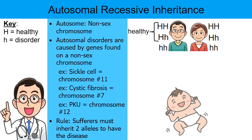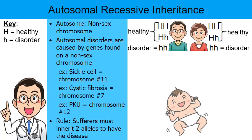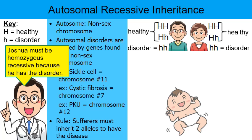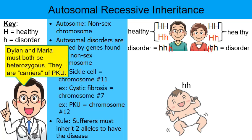Mr. Henderson is healthy, so he has to be either homozygous dominant or heterozygous. Same for Mrs. Henderson — she's healthy so she must be one of those two combinations. But their child Joshua has the disorder, so he must have two recessive alleles — he must be homozygous recessive. Where did he get those two recessive alleles? He had to get them from his parents. Even though Mr. and Mrs. Henderson are healthy, they each must possess a recessive allele that they passed on to baby Joshua — that's how he inherited this disorder.